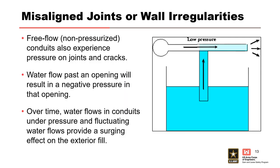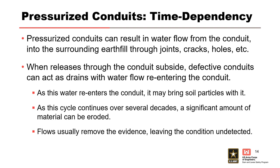Joint offsets can cause high negative pressures to develop at overhangs during high velocity flow within the conduit from a venturi effect. Negative pressures can pull or suck surrounding soils into the conduit through openings, and voids can develop adjacent to the conduit. Continued loss of surrounding soil could lead to the development of a sinkhole, which can then lead to breach if it connects to the reservoir. Conduits that get pressurized can force water into the surrounding earth fill; when the flow reduces, that water seeps back into the conduit bringing soil particles with it. This process is cyclical and may take a long period of time to become observable.